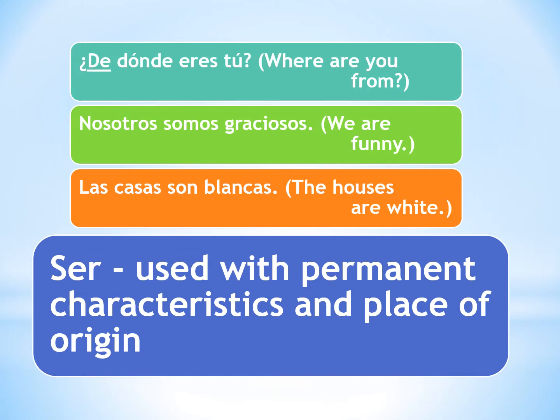Now let's look at some examples of when we use ser. Ser is used with permanent characteristics and place of origin. For example: '¿De dónde eres tú?' — 'Where are you from?' Notice the word de; typically de and ser go together for place of origin. Another example: 'Nosotros somos graciosos' — 'We are funny' — that's a characteristic. 'Las casas son blancas' — 'The houses are white' — another permanent characteristic. By permanent we mean things that don't change from day to day on their own.